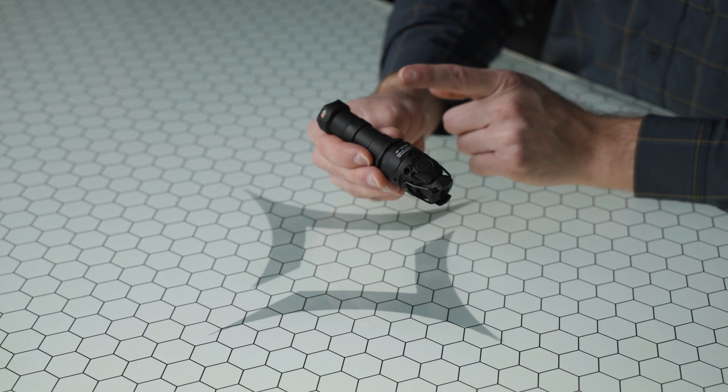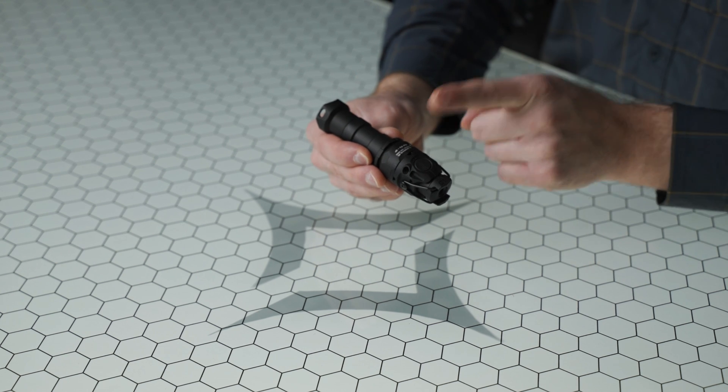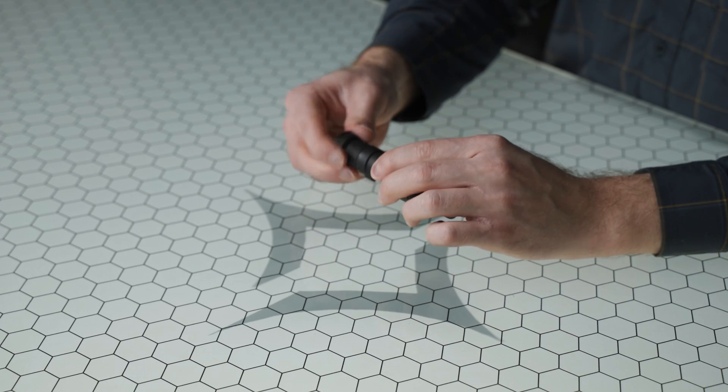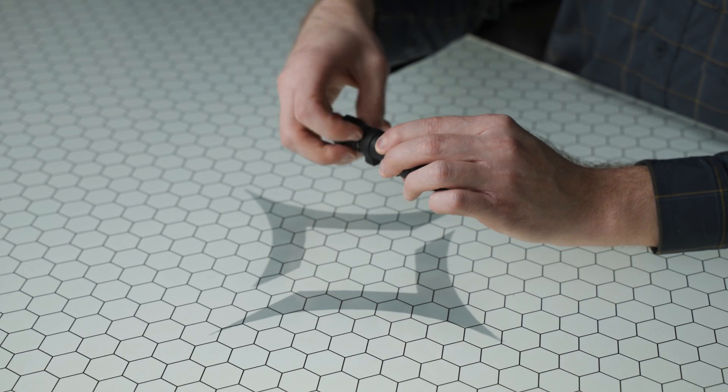The first thing we're going to do is render the device safe. We want to make sure the tail cap or the head is unscrewed before we start handling anything. I'm going to remove the tail cap.